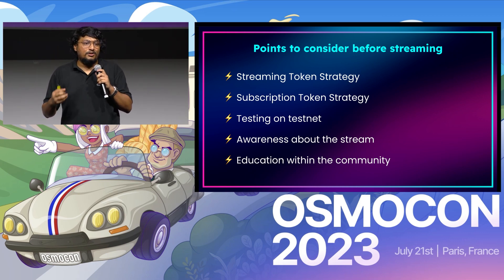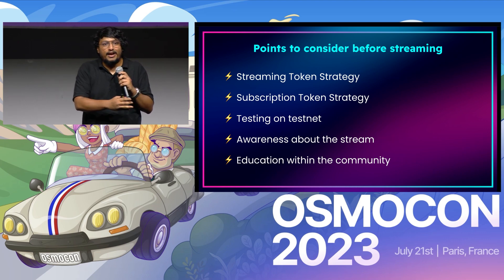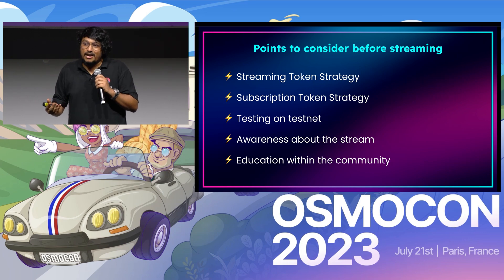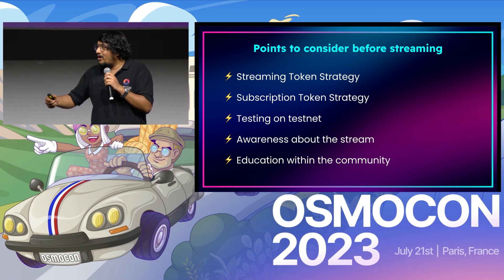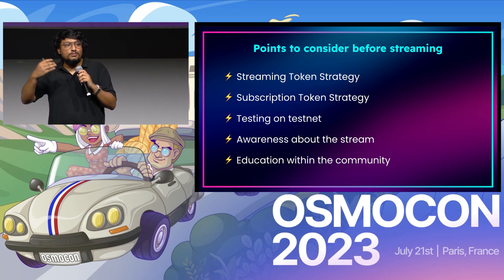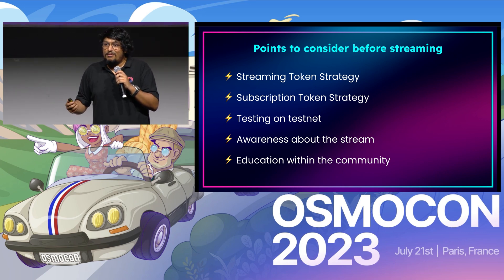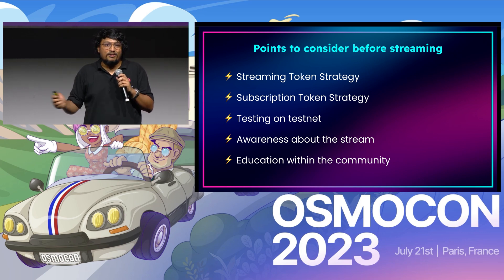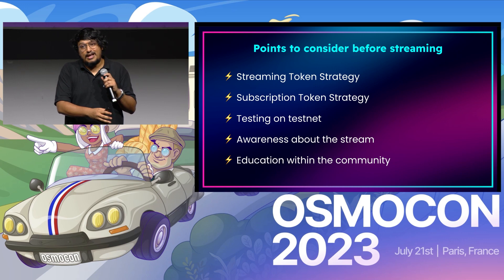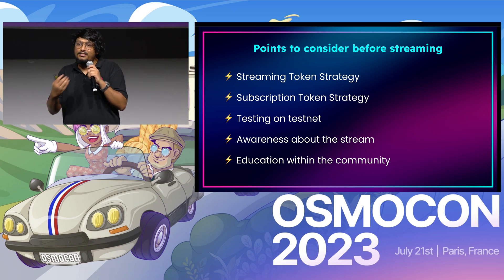Points to consider before planning a StreamSwap stream: First, get your streaming token strategy right — how many tokens to allocate, when to tell your community about the allocation, and whether it's decided as part of your tokenomics. The subscription token strategy is also important: do you want to raise in Atom, Osmo, or stablecoin? You should be able to facilitate the swap in both volatile and stable tokens. Testing on testnet is basic but important, so you're not anxious when going ahead with the mainnet stream. Increasing awareness about the stream well in advance leads to increased participation and better-prepared community members — key lessons learned after nine streams.